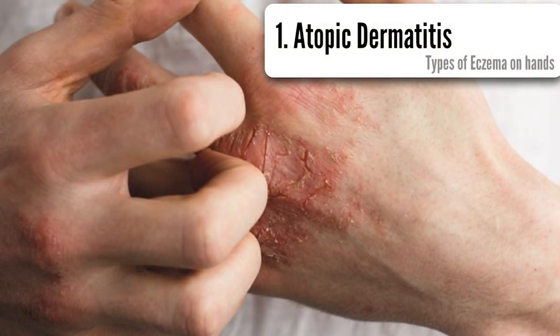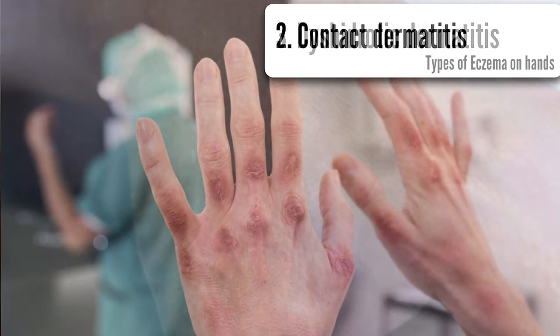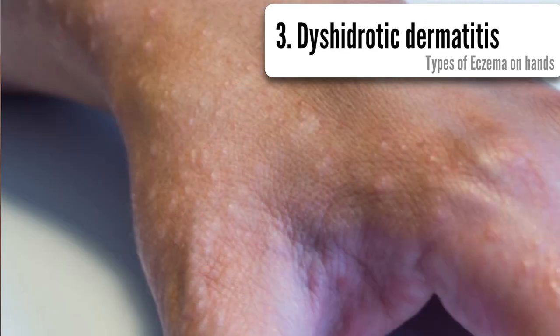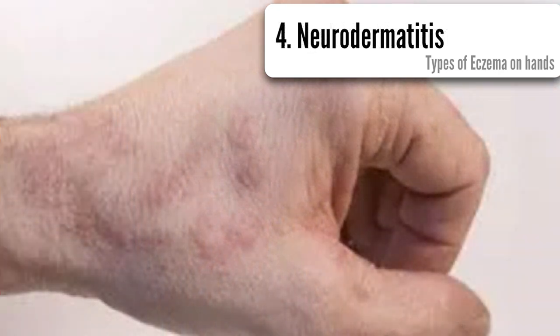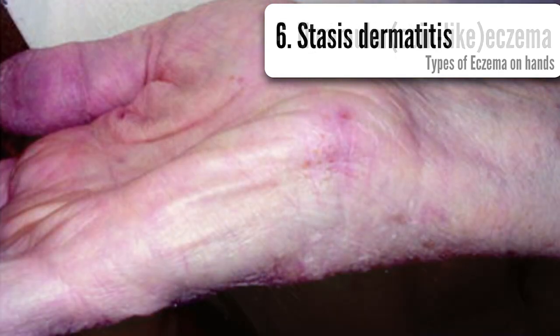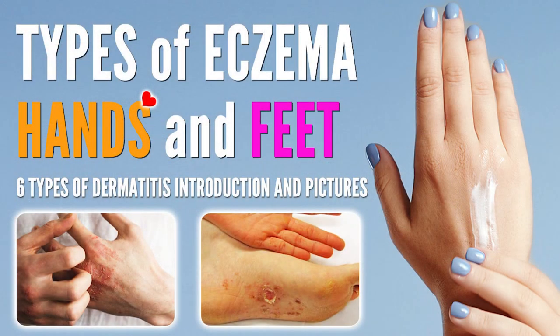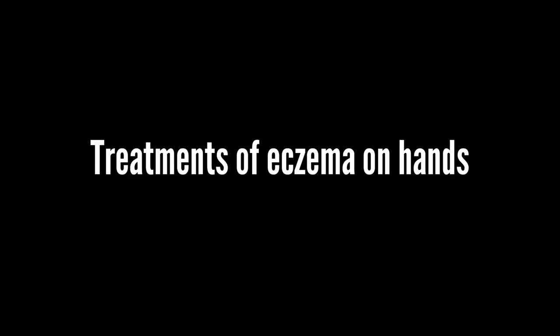There are several types of eczema on hands. They include atopic dermatitis, contact dermatitis, dyshidrotic dermatitis, neurodermatitis, nummular eczema, and stasis dermatitis. More detailed information about these eczemas can be found in another YouTube video named 'Types of Eczema on Hands and Feet.'